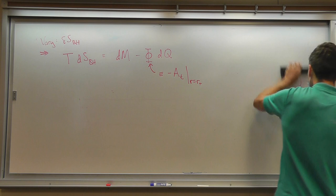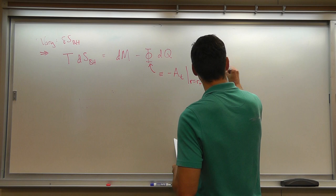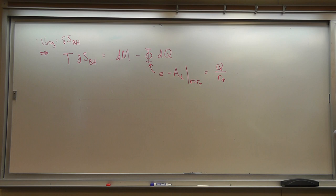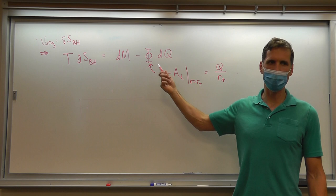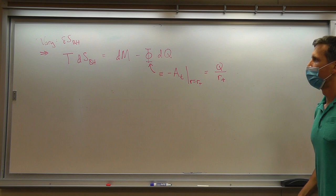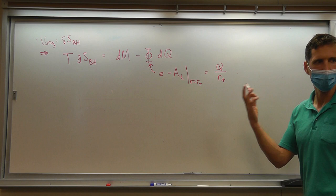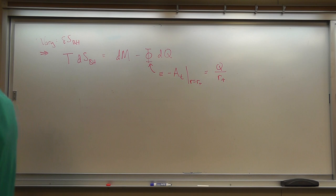If you go back to the Reissner-Nordström solution, you can check that this is Q cubed over r plus. The phi showing up here is just the ordinary electric potential, now evaluated at the horizon of the black hole. And this, of course, looks just like the first law of thermodynamics that we wrote up a few minutes ago.